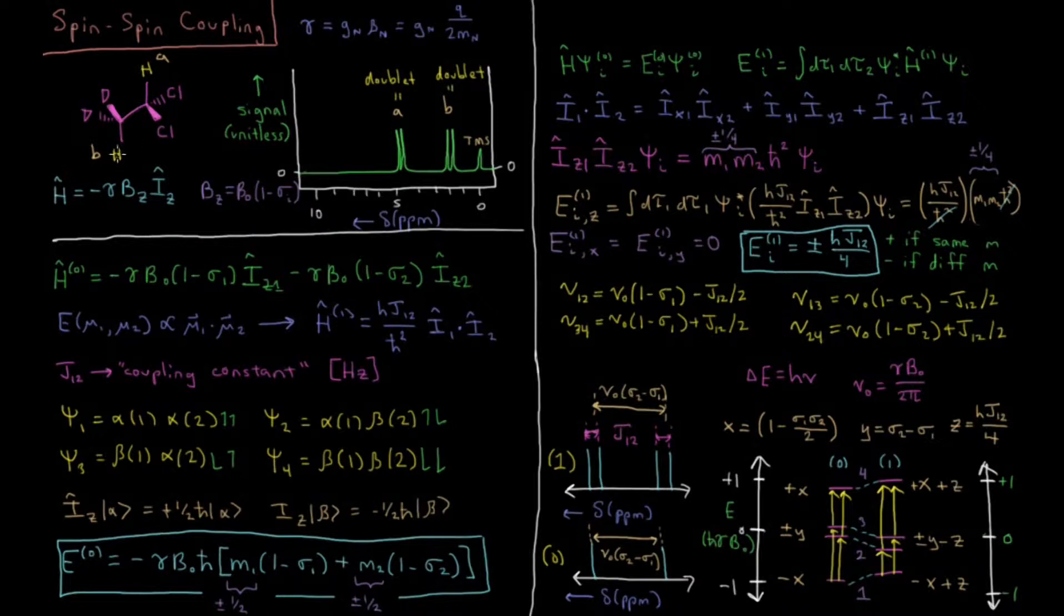What in quantum mechanics tells us that if we have two protons nearby in a molecule which undergo nuclear magnetic resonance, why is it that they will split each other into such coupled peaks like that?